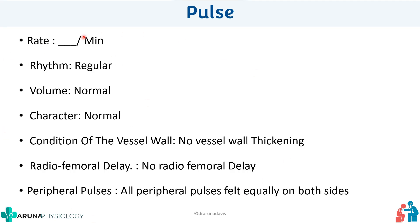When reporting the pulse, state the rate after counting for one minute, the rhythm (regular or not), the volume and character, whether there is any vessel wall thickening, whether there is radio-femoral delay, and check all peripheral pulses, reporting whether they are felt equally on both sides. All this comes under pulse.